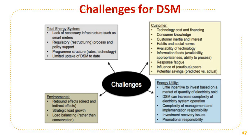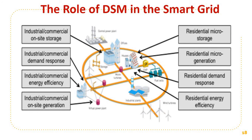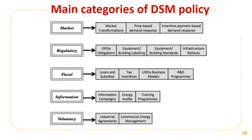There are also various challenges from the customer side, utility side, environmental side, and for the total energy system. The role of DSM in the smart grid is listed here: various industrial and commercial on-site storage, demand response, efficiency, and on-site generation should all be addressed using the smart grid. It can also include residential micro-storage, micro-generation, residential demand response, and residential energy efficiency. DSM has a great role in the implementation of the smart grid because it ultimately aims at optimizing energy usage.